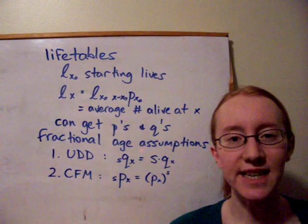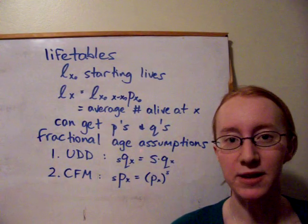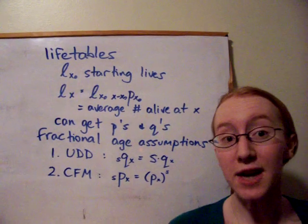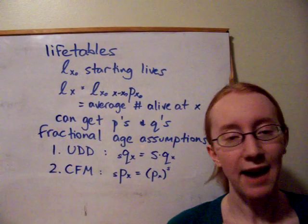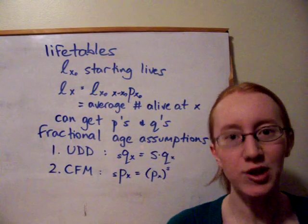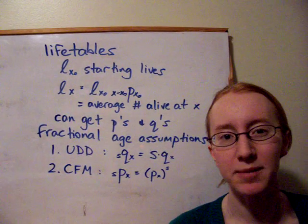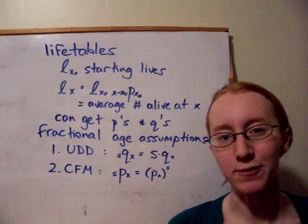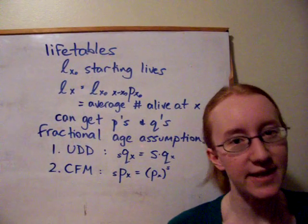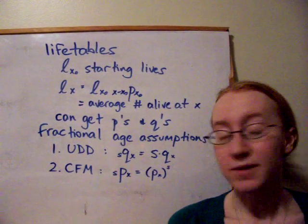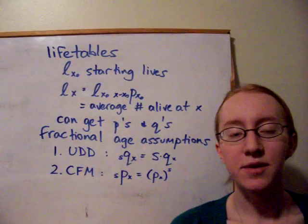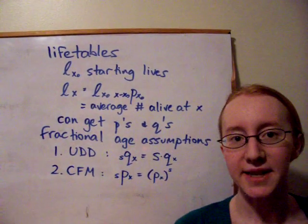First is UDD, which stands for Uniform Distribution of Deaths. What we do there is basically assume that the fractional part of a year lived — looking only at the decimal place — is a uniform 0,1 random variable that's independent of the number of whole years that the person lives. The result we get in that case is that sQX is equal to s times 1QX.